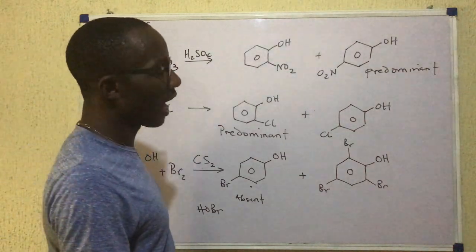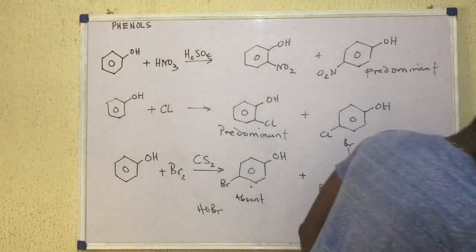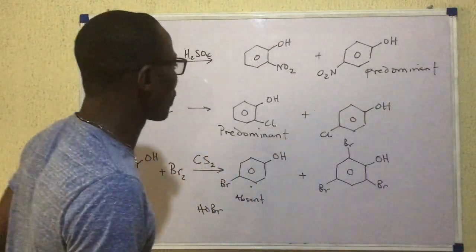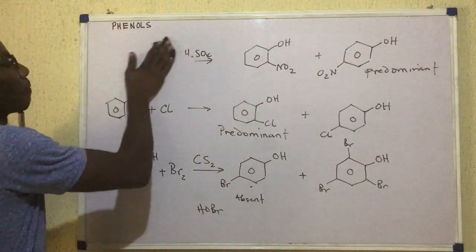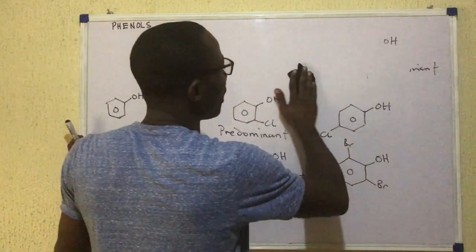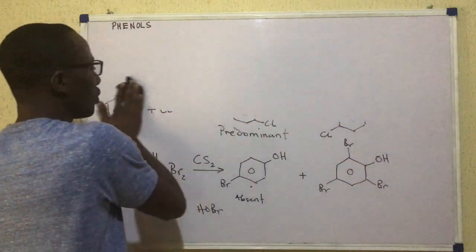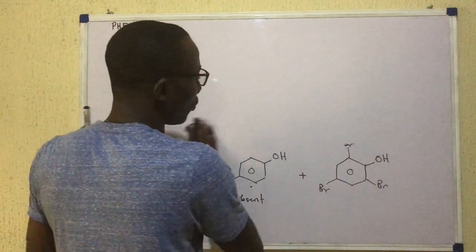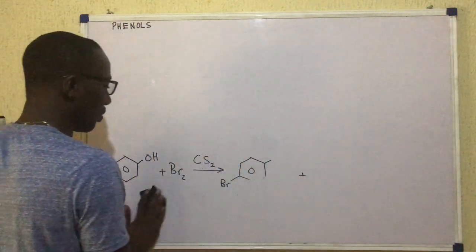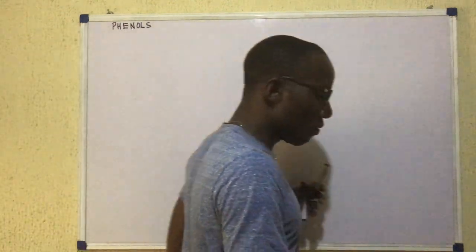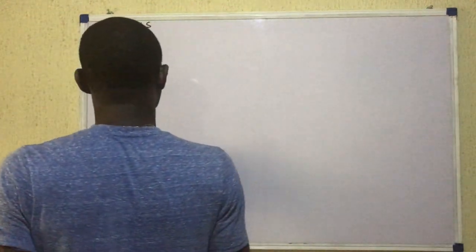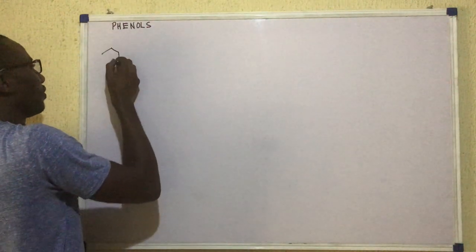Leaving the reaction with halogens. Let's talk about some other reactions of phenol. Phenol can react with HNO2. What is HNO2? HNO2 is nitrous acid. And when it reacts with HNO2, see what happens. So this is phenol.